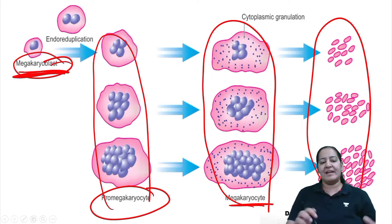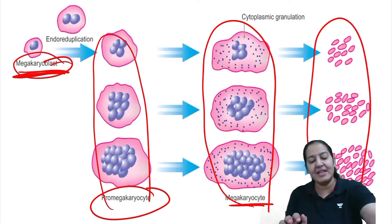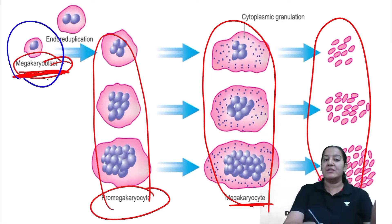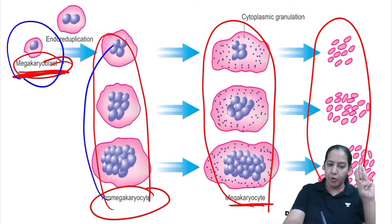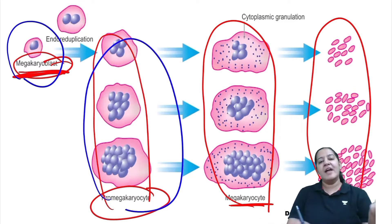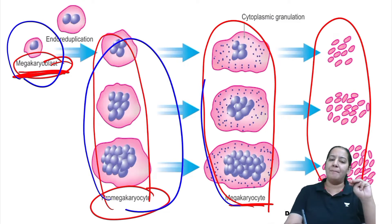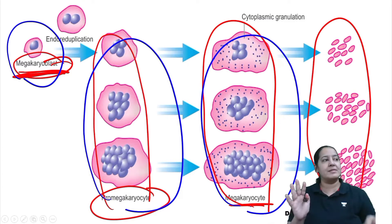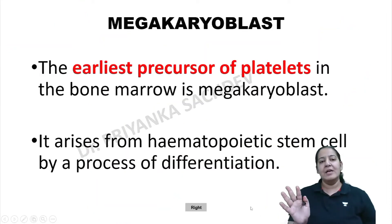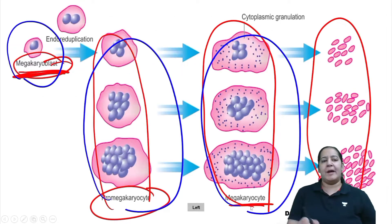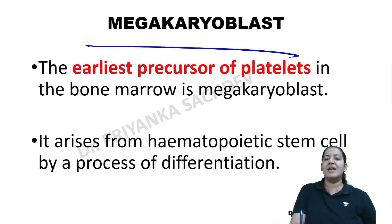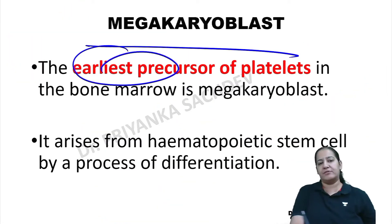So what are the precursors of the platelet? The precursors of the platelet are three: megakaryoblast, which gives rise to promegakaryocyte, and that gives rise to megakaryocyte. These are the precursors of the platelet. The first cell, megakaryoblast, is the earliest precursor of the platelet.